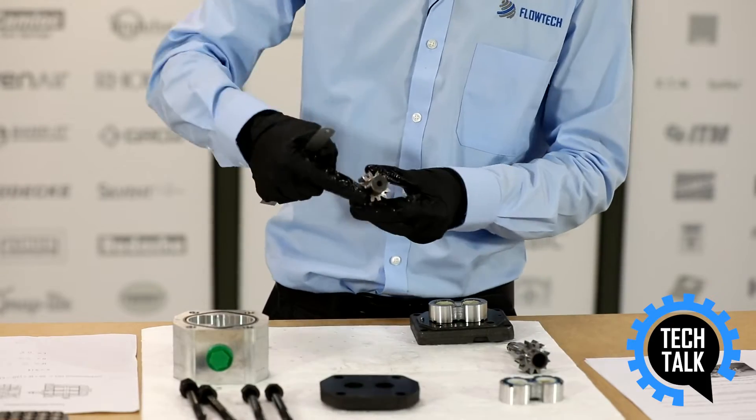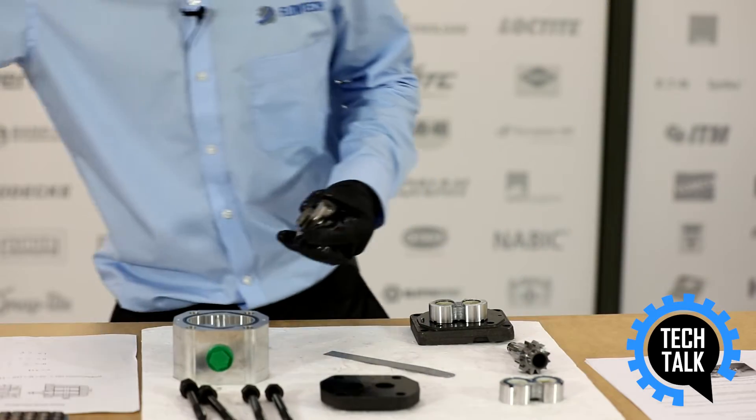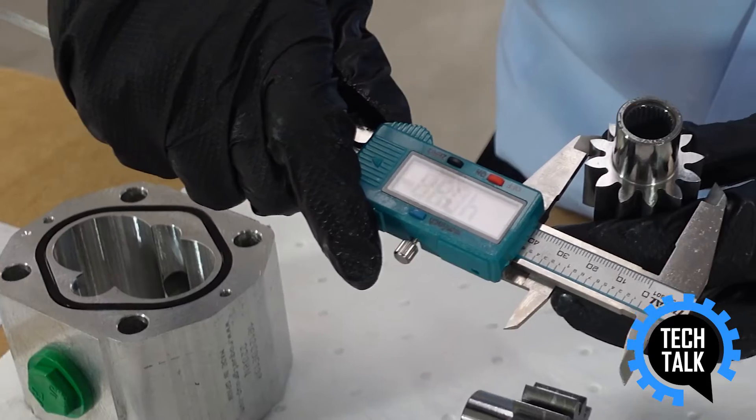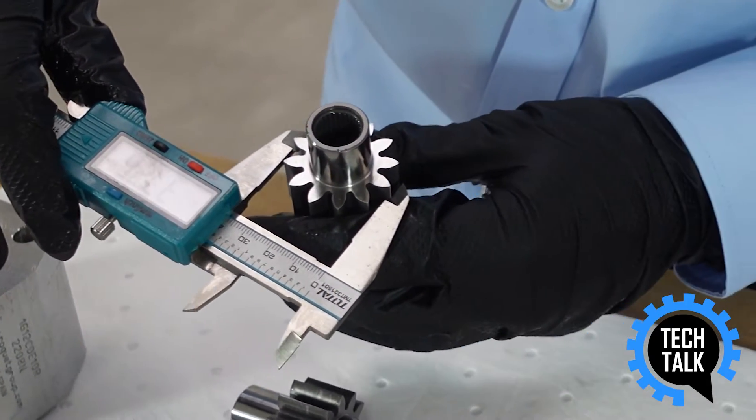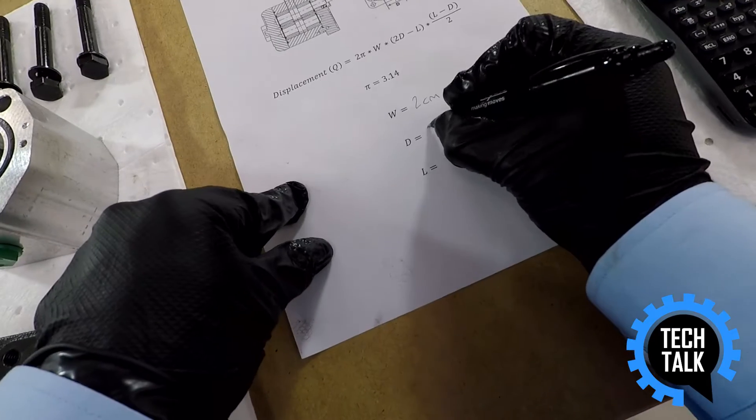Next, if we get the diameter of the gears across, so you might find this easier with the caliper. Get that as 37 or 3.7 centimeters.